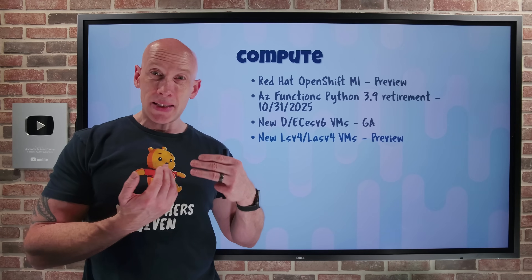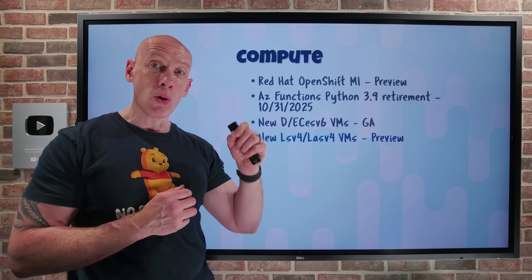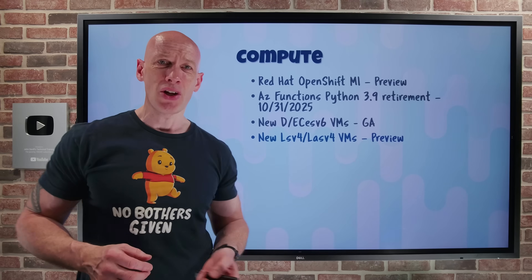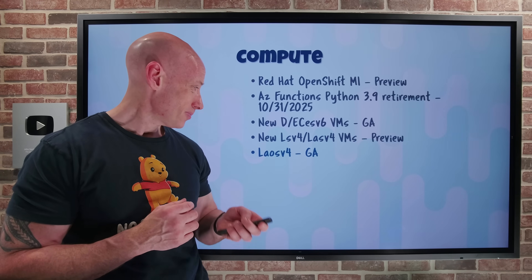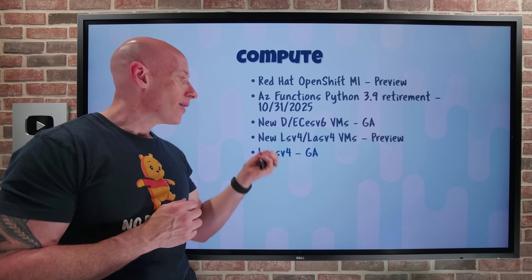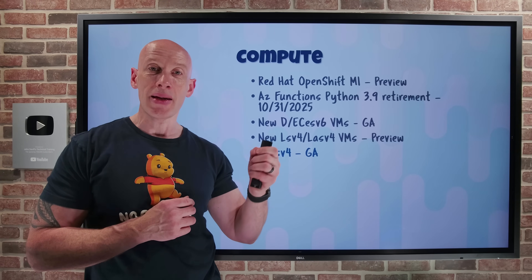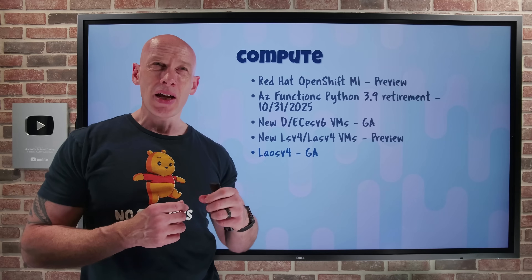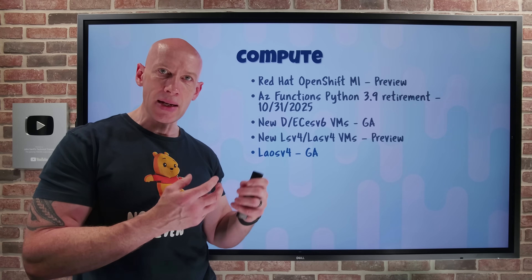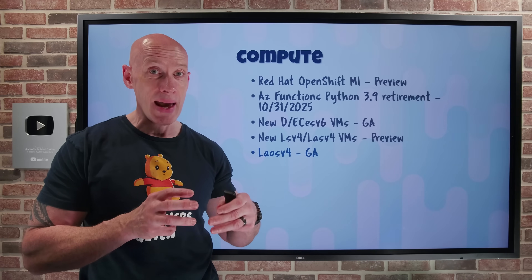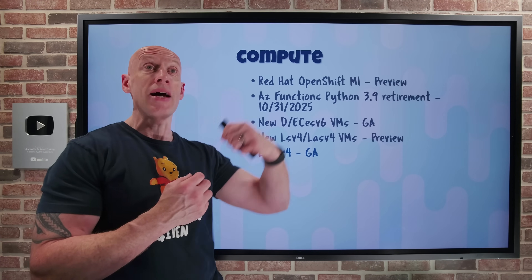These come in 2 to 96 vCPU versions — the 2, 4, and 96 are new options. You get 8 gigabytes of RAM and 240 gigabytes of local NVMe per vCPU, which means the biggest version gives you 23 terabytes of local storage. There's also the LAO v4 in GA: 2 to 32 vCPUs, 8 gigabytes of memory, and 720 gigabytes of local NVMe per vCPU. That's aimed at distributed high-scale workloads, storage caching layers, and Elasticsearch data warehouses where you need a massive amount of local NVMe storage but perhaps not as many vCPUs or as much memory.